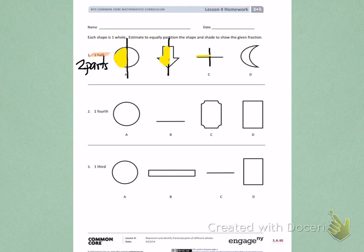Last, I have a moon on letter D. The moon is similar to the arrow, where both sides need to be equal like a mirror. If I partition the moon with a vertical line, I will not make two equal groups. However, if I partition the moon with a horizontal line, the top will be similar in size to the bottom. And then I will shade to show one half.